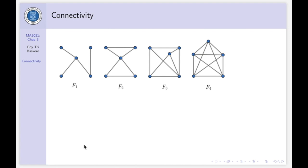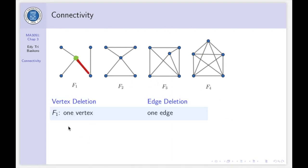Let's see the following four graphs. The question is: how many vertices or edges must be deleted to disconnect each graph? For graph F1, we need only one vertex to destroy the connectivity. When you delete the green vertex, the graph becomes disconnected. Also, when you delete one edge — the red one — this graph will be disconnected. So we need one vertex or one edge to disconnect graph F1.